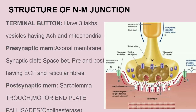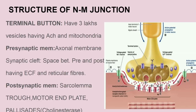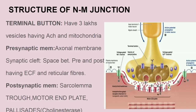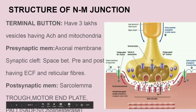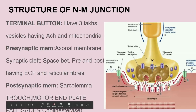The postsynaptic membrane has various receptor sites known as the nicotinic receptor for acetylcholine, mainly present near the junctional folds or the palisades. In these junctional folds or palisades or subneutral cleft, there is acetylcholinesterase enzyme, which degrades the acetylcholine coming from the terminal buttons. So remember three main things: terminal button, presynaptic membrane, and postsynaptic membrane, with the synaptic cleft containing ECF between the two.